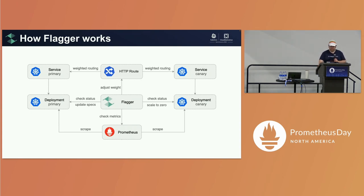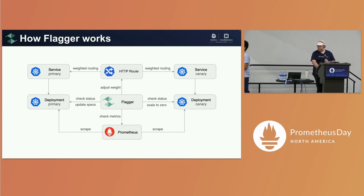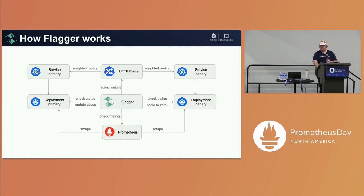Flagger creates services for your canary and primary deployments. All you need is to create a deployment and Flagger will handle all the other objects. When Flagger sees a new canary version, it scales that up and uses an HTTP route — a generic term that could be a virtual service, an SMI traffic split, or a Canary Nginx annotation — anything which can distribute traffic to different services.